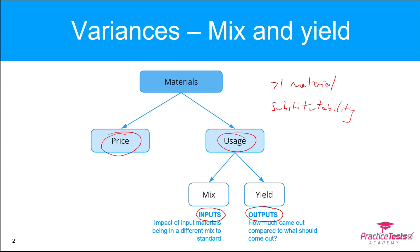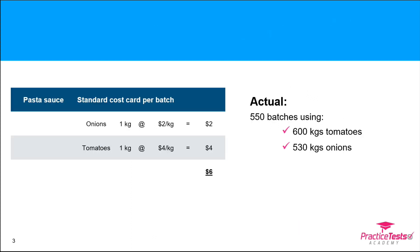It's easiest to see by looking at an example, so we're going to look at that pasta sauce example. On the left-hand side is the standard cost card — the standard recipe for one batch of pasta sauce. We have one kilo of onions and one kilo of tomatoes. Onions are relatively inexpensive at $2 a kilo, tomatoes are $4 a kilo, so the cost of one batch is $6 worth of materials.